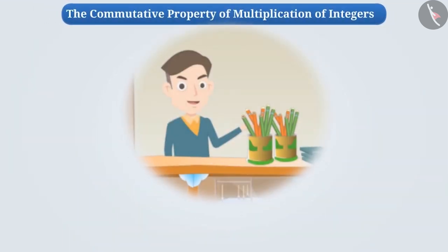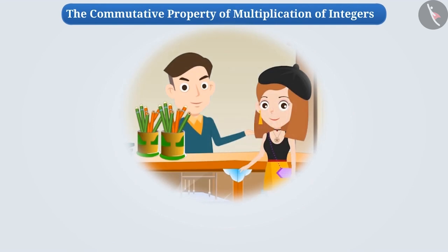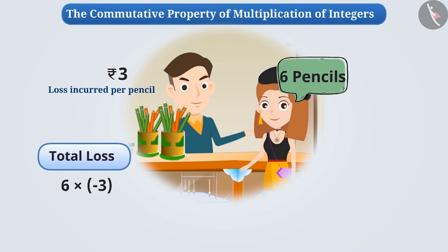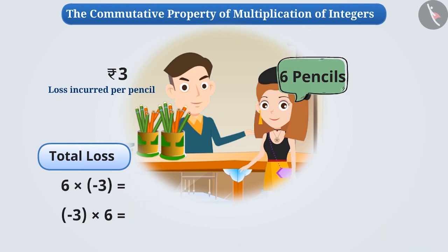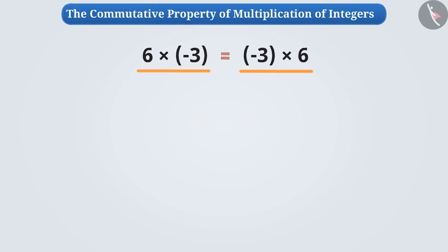Now let us understand the commutative property of multiplication of integers. Suppose a shopkeeper has some old pencils and loses rupees three per pencil while selling them. If he sells six such pencils, we will have to multiply six by minus three to find the total loss. If we solve six multiplied by minus three, we get minus eighteen. Similarly, minus three multiplied by six also gives minus eighteen. That is, six multiplied by minus three is equal to minus three multiplied by six.